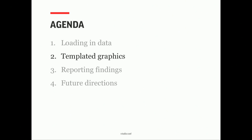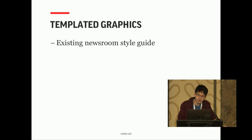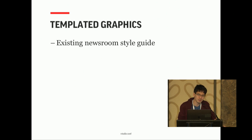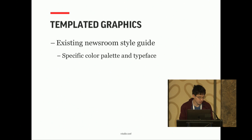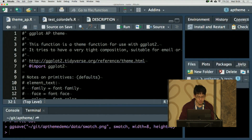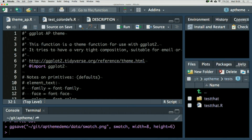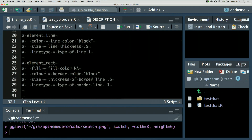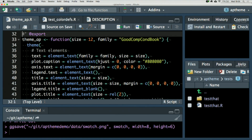The next thing is template graphics — something we are doing and want to do more of. There's an existing newsroom style guide, so it's easy for us to develop, using ggplot, a theme package. We just follow very prescriptively what the style guide says. This is actually available on the Associated Press GitHub if you want to ape the graphical style: github.com/AssociatedPress/APtheme.